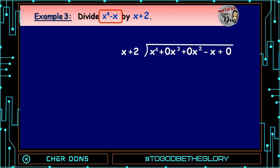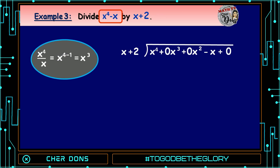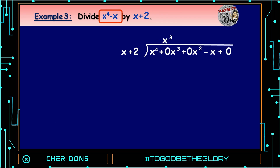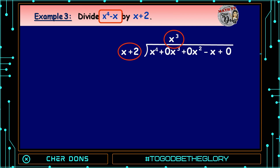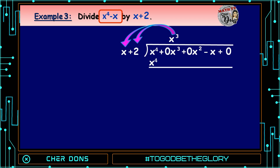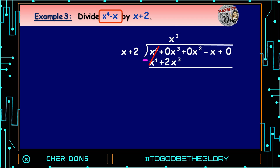Step 2: Divide the first term of the dividend by the first term of the divisor. x⁴ divided by x equals x raised to 4 - 1, which equals x³. So x³ is the first term of the quotient. Step 3: Multiply x³ by (x + 2): x³ times x equals x⁴, and x³ times 2 equals 2x³. Step 4: Subtract: x⁴ - x⁴ = 0, and 0x³ - 2x³ = -2x³.